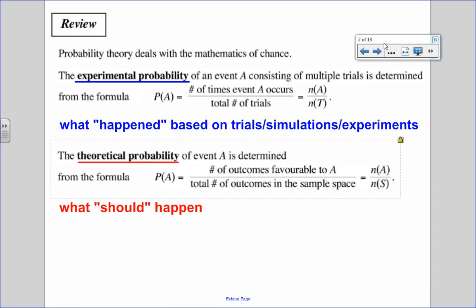So experimental probability is what happened. It's based on a trial or a simulation or an experiment. For example, I flip a coin 10 times, I count how many times tails comes up. Theoretical probability is what should happen.